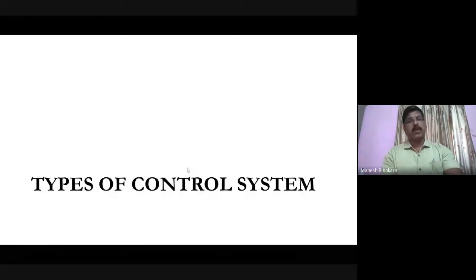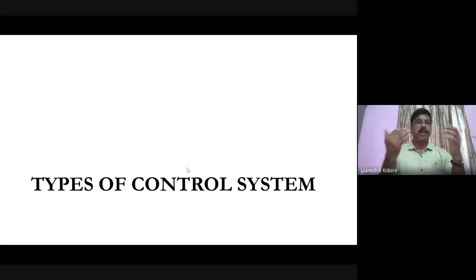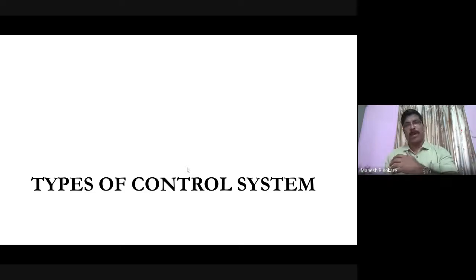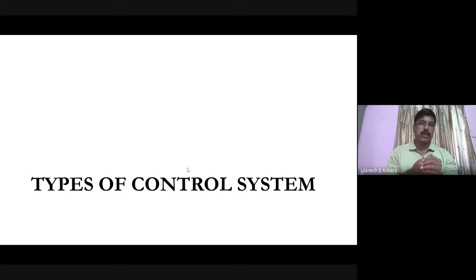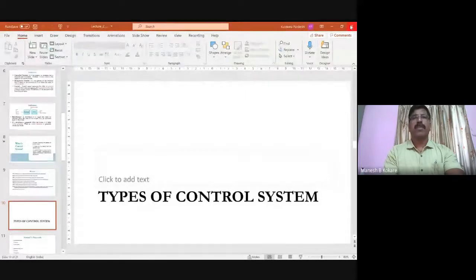We'll stop here for today's lecture. In tomorrow's lecture we will continue with different types of control systems: open-loop, closed-loop, linear, non-linear, time-varying, time-invariant, single-input single-output, and multi-input multi-output control systems. Thank you very much — if you have any doubts I'll be happy to answer your questions.